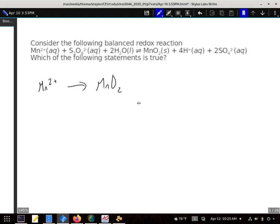We can actually do this from just figuring out our oxidation numbers. Mn2+ has a positive 2 oxidation number. On our MnO2, since oxygen is negative 2, and there's 2 of them, this would be positive 4.